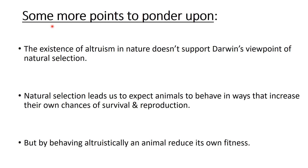Here are some important points to ponder. The existence of altruism in nature doesn't support Darwin's viewpoint of natural selection. Natural selection expects organisms to behave in ways that increase their own chances of survival and reproduction — that is where the 'survival of the fittest' theory comes from. But by behaving altruistically, an animal reduces its own fitness. So altruism and natural selection are somewhat linked but also contradictory.